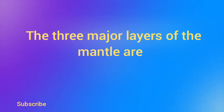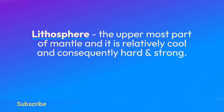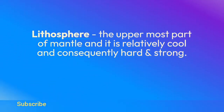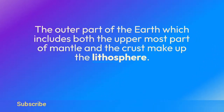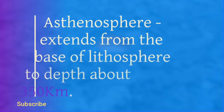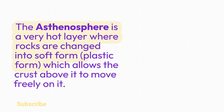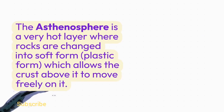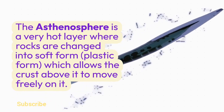The three major layers of the mantle are: the Lithosphere, the uppermost part of the mantle, which is relatively cool and consequently hard and strong. The outer part of the Earth, which includes both the uppermost part of the mantle and the crust, makes up the lithosphere. The Asthenosphere extends from the base of the lithosphere to a depth of about 350 km; it is a very hot layer where rocks are changed into soft, plastic form, which allows the crust above it to move freely.